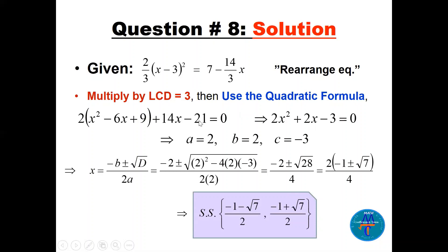After simplifying, we get a = 2, b = 2, c = −3. Plug into the quadratic formula: x = (−b ± √(b² − 4ac)) / 2a. Simplify the discriminant: √28 = 2√7. Factor out 2 from the numerator and divide by 2a = 4. The final answer is x = (−1 ± √7) / 2.